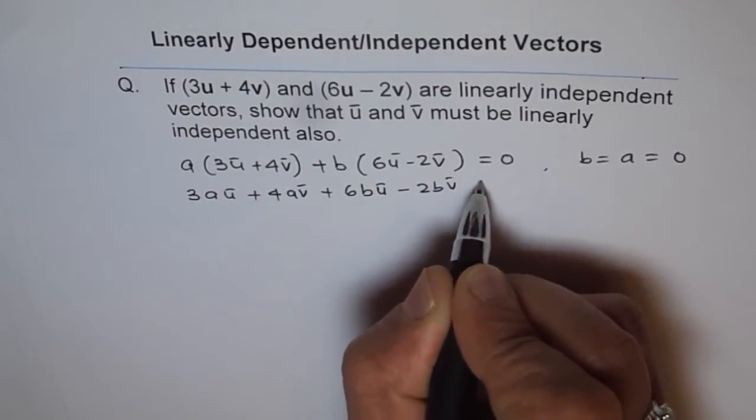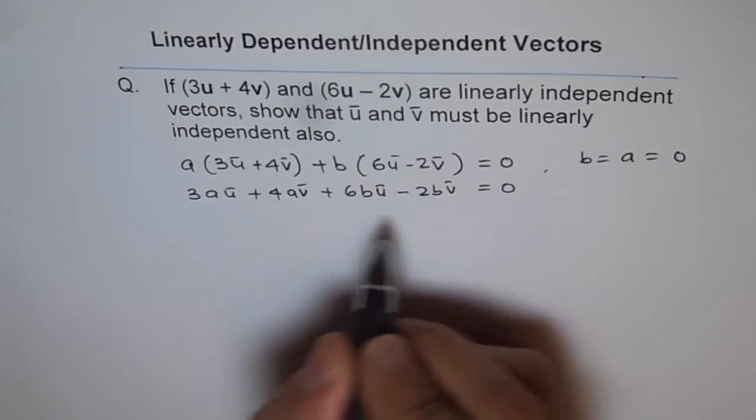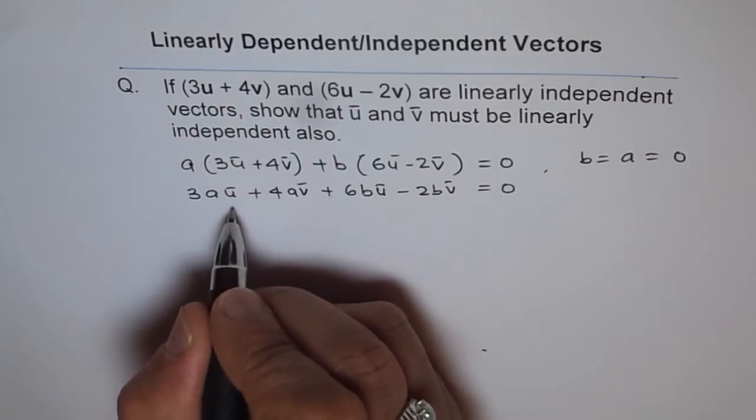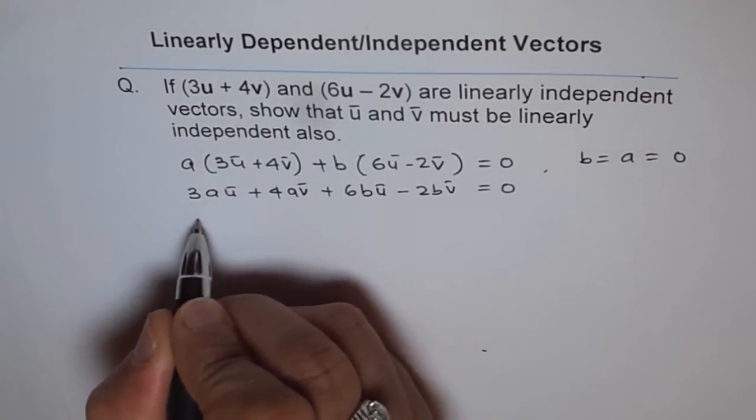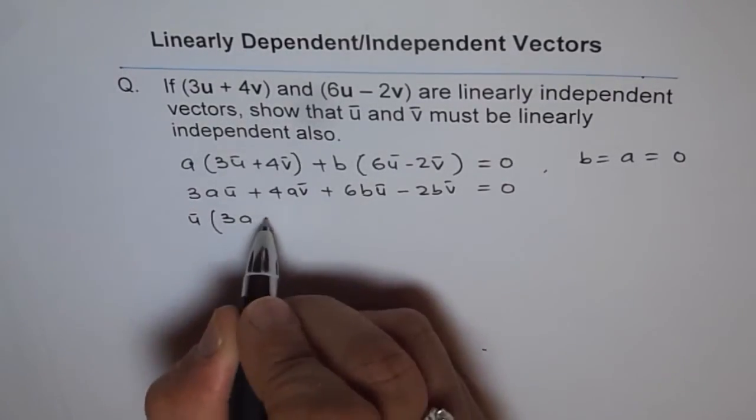Let's combine the coefficients of u's and v's. With u we get 3a + 6b, and with v we get 4a - 2b.